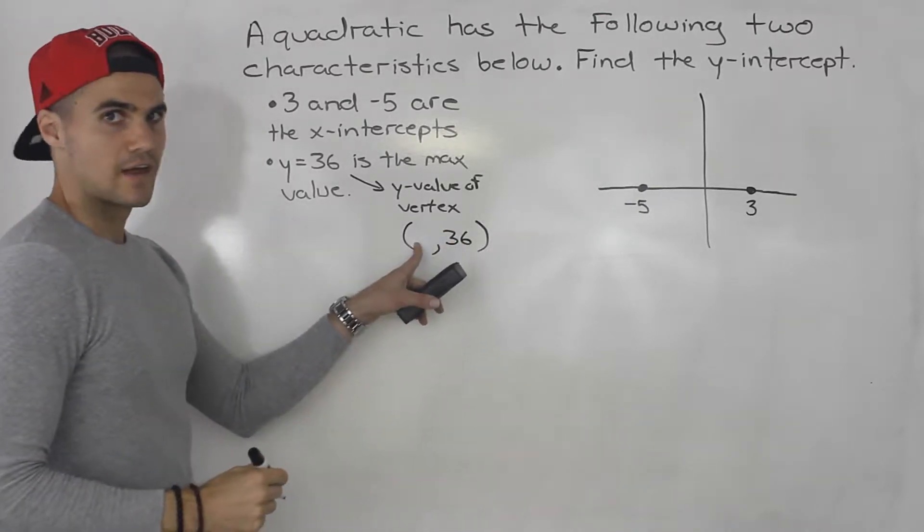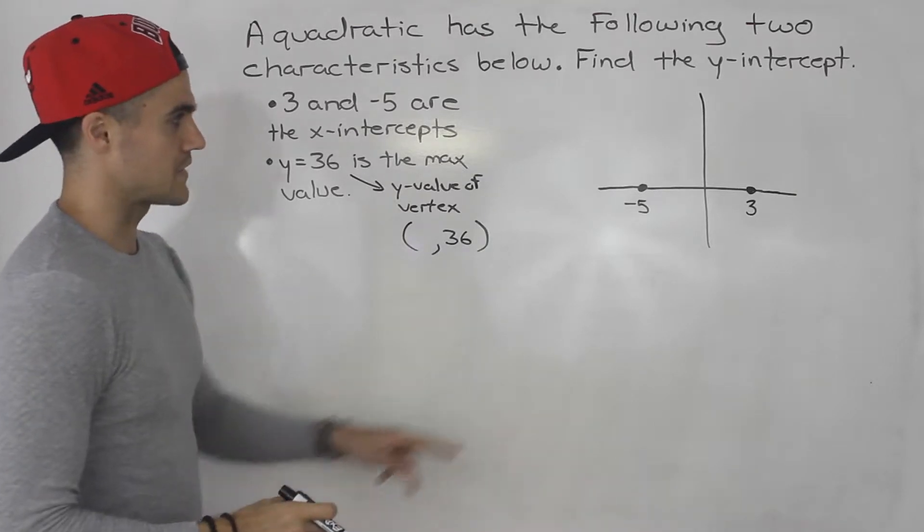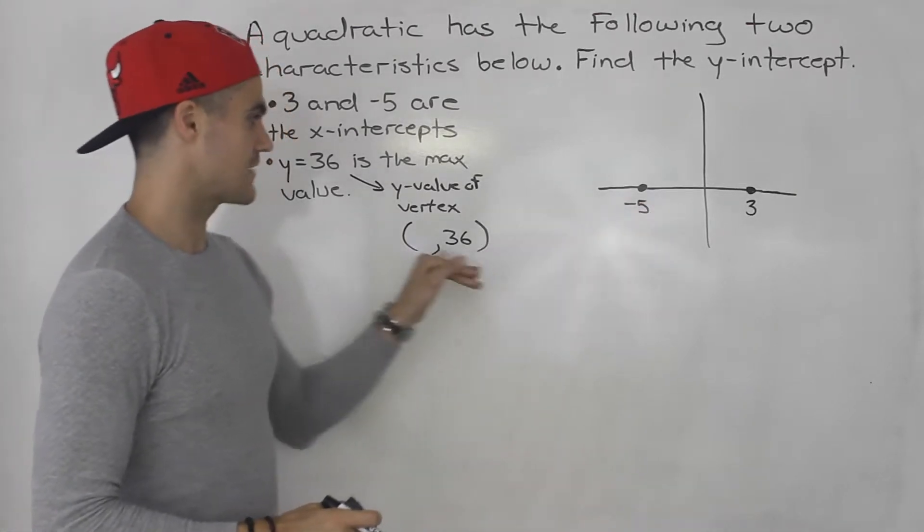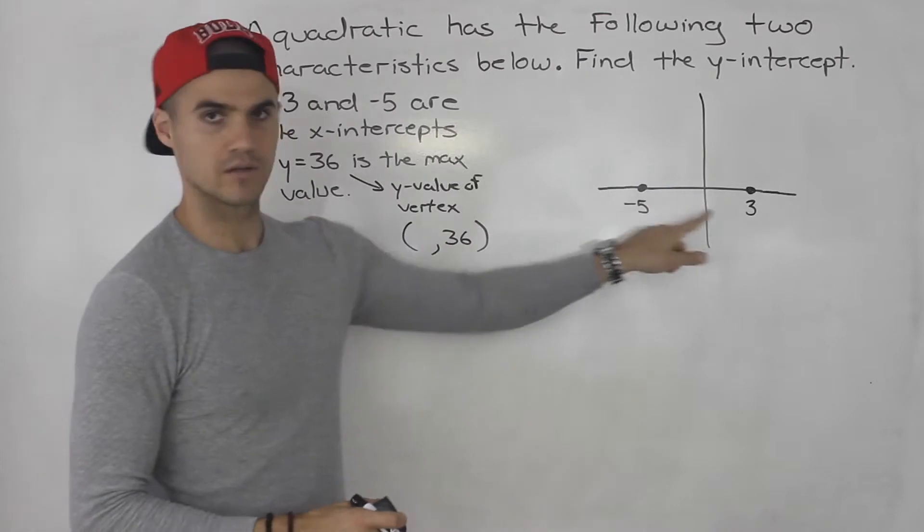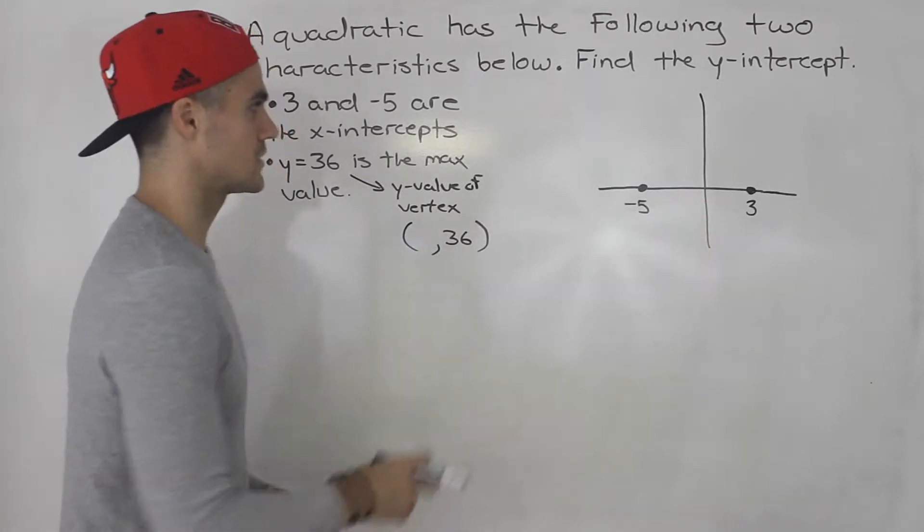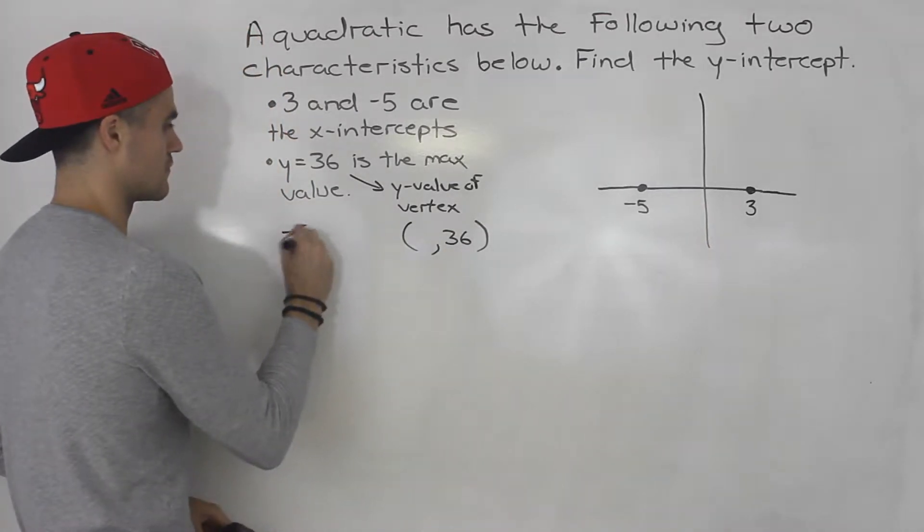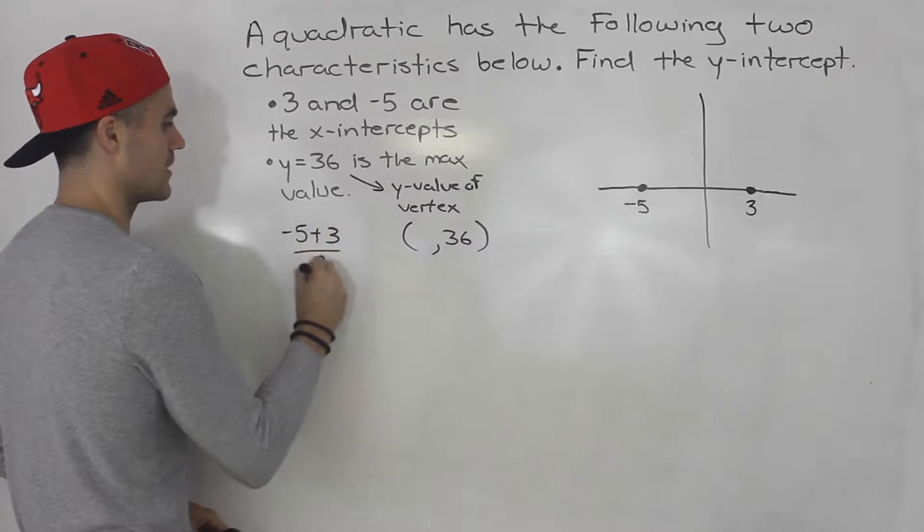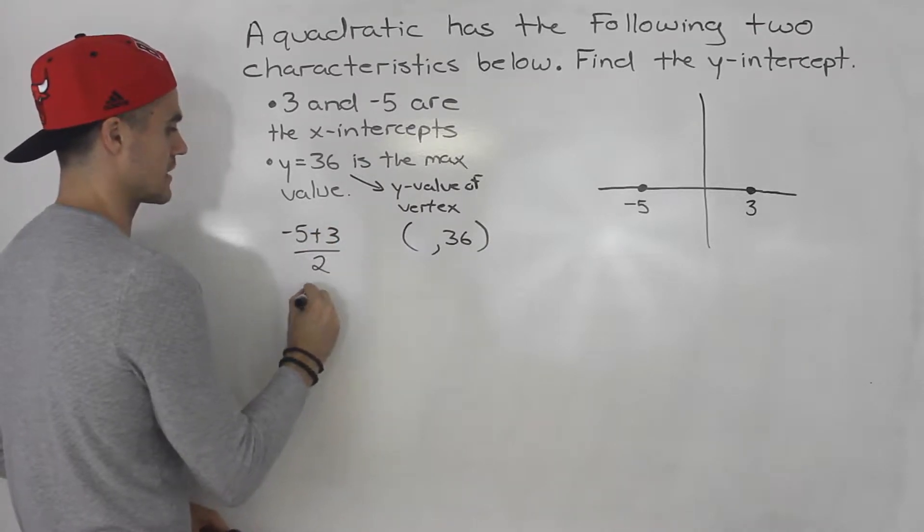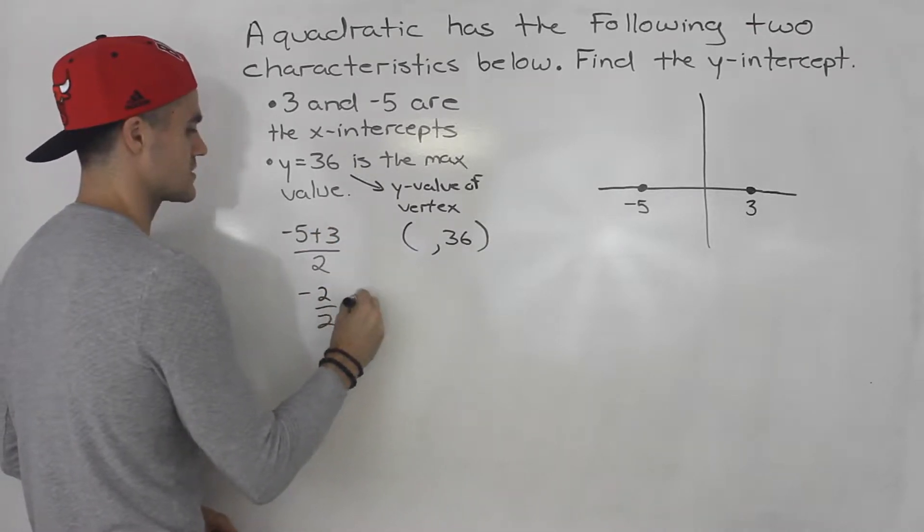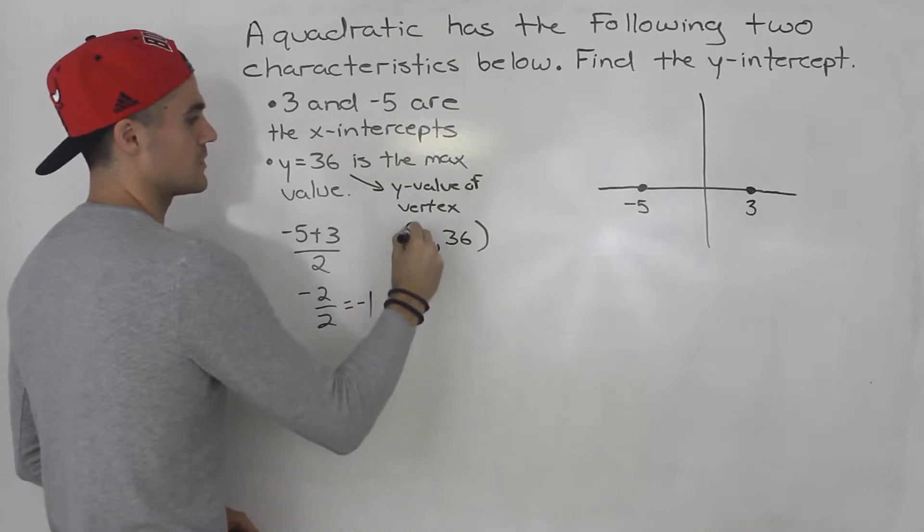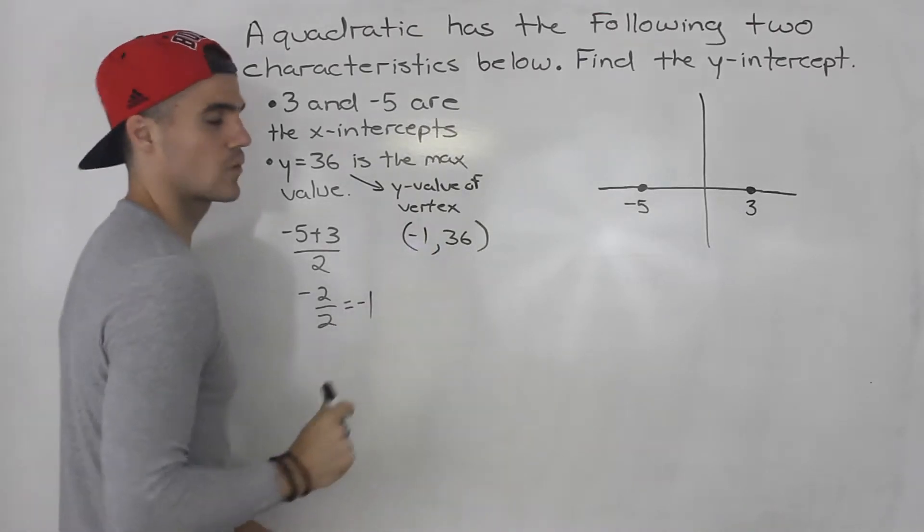Can we get the x-value? Well, we can because we have the intercepts. The x-value of the vertex is always the midpoint between the intercepts, so we could just take negative 5 plus 3 divided by 2. Negative 5 plus 3 is negative 2. Divided by 2 gives us negative 1. So, we know the vertex has a coordinate negative 1 and 36.